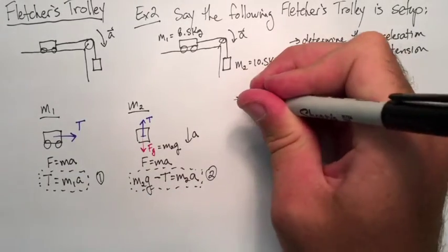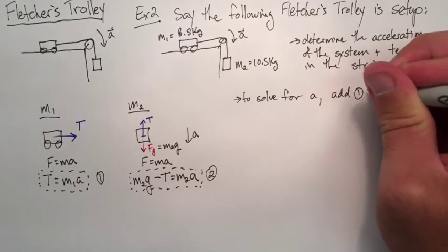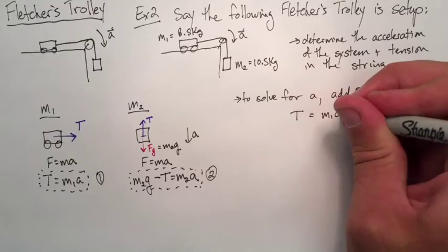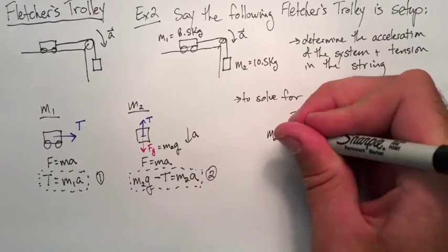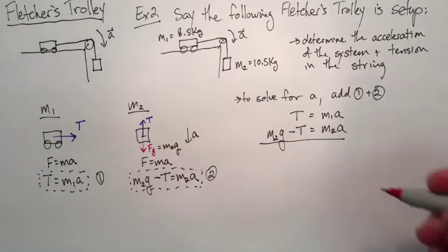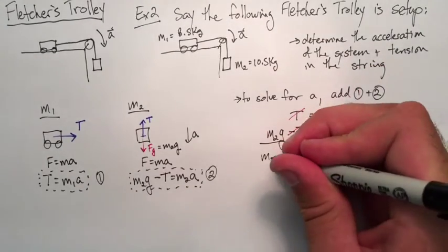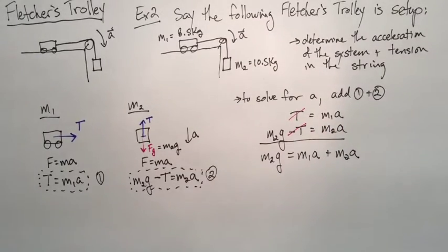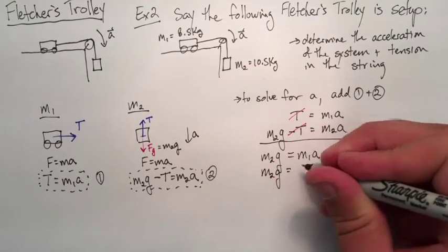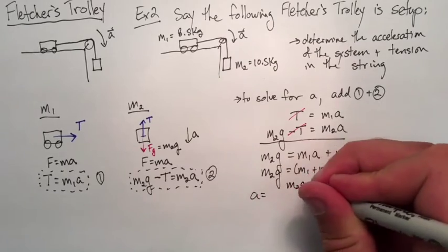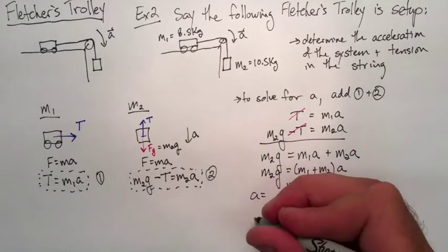Again, to solve for acceleration, we're going to add the two equations together to do an elimination. So let's write out those equations to line them up. We're going to add everything in front of the equal sign and everything behind the equal sign. The tensions again will cancel when we add them. So we get M2G equals M1A plus M2A. We can factor out that A and then solve for it. So here we find that acceleration should be equal to 5.42 meters per second squared.